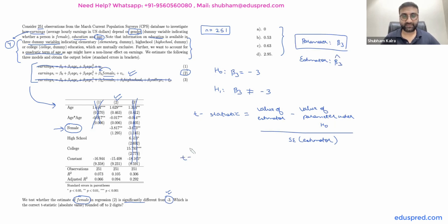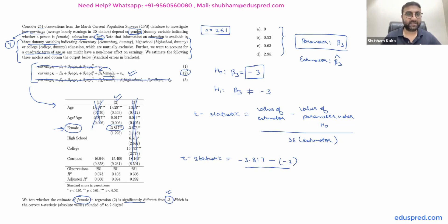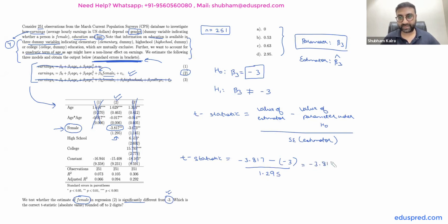Looking at the t-statistic formula, we write the value of the estimator, beta three hat, which is minus 3.817. Then we subtract the value of the parameter under the null hypothesis, which is minus three. Divided by the standard error of beta three hat — it is noted in brackets that the standard errors are given, so the standard error is 1.295. This gives us: minus 3.817 minus (minus 3), divided by 1.295.